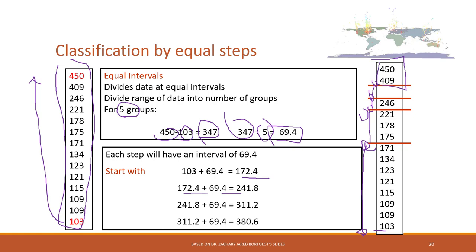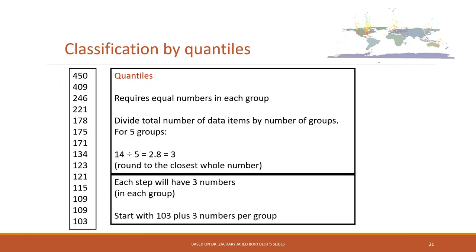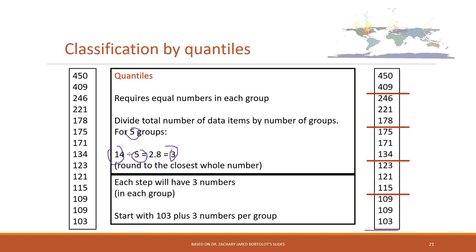We can also classify based on quantiles, meaning an equal number of items in each group. For example, with five groups, we divide the total number of items by five to get the count per group. Starting from the minimum value, the first three items belong to group one, the next three to group two, and so on. The last group may have slightly fewer items, which is fine.